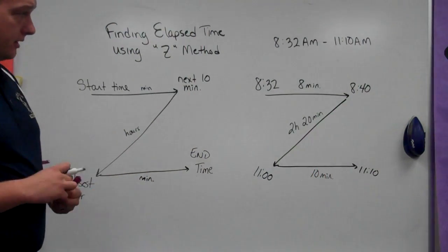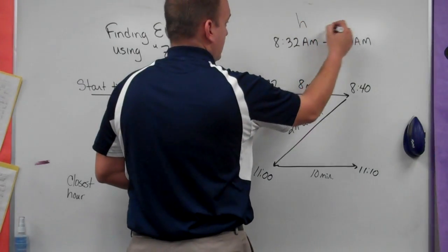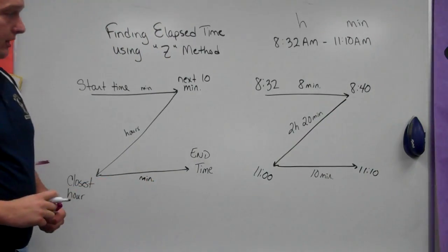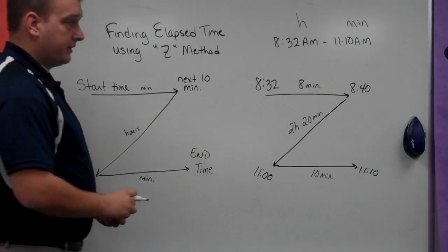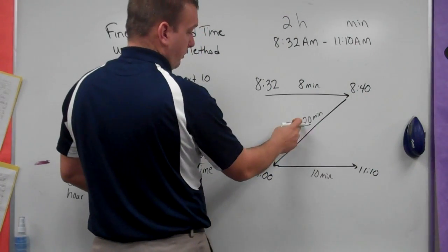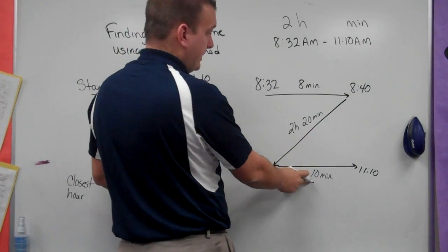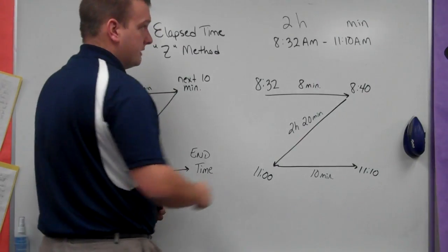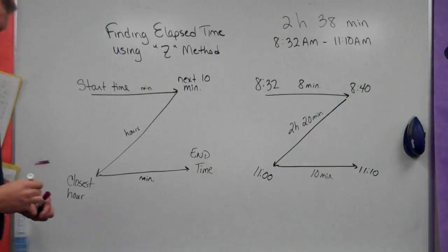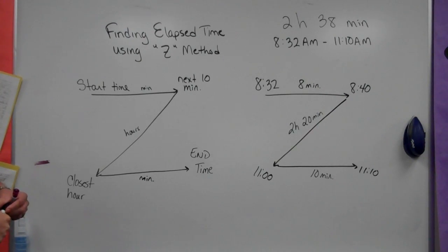Now, I go back through and I add up to get my hours and minutes that have passed. Be careful if we have to regroup anywhere. I don't think we will with this one, but I have two hours and I have 20 minutes plus 10 minutes, that's 30 minutes, plus an additional eight minutes for a grand total of two hours and 38 minutes that have passed with this elapsed time example.